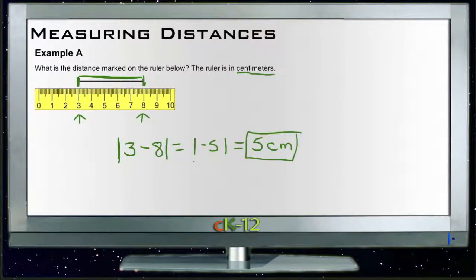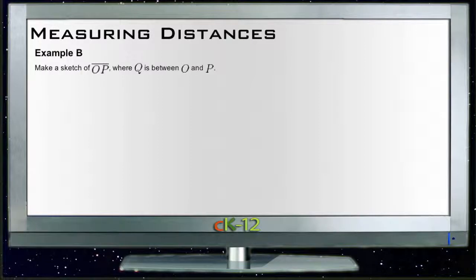Alright, then for example B, it says make a sketch of line OP where Q is between O and P. So all we need to do is start by sketching a line, and then we mark two points, one on each end. So now it's an actual line segment. We have O here and P here.